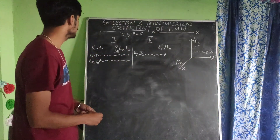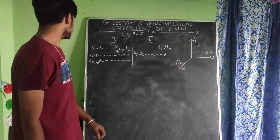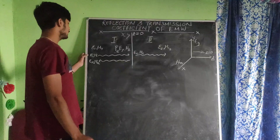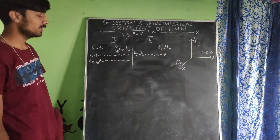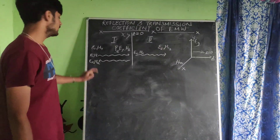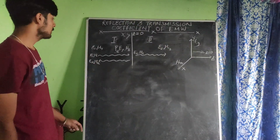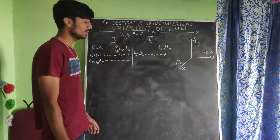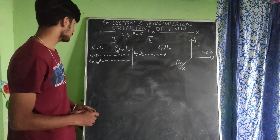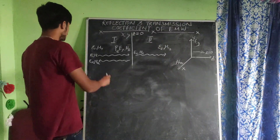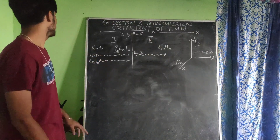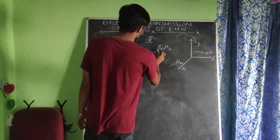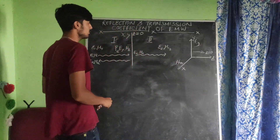When an incident wave is traveling from medium one to another, let the incident wave be E_i with its magnetic component H_i. Some gets reflected — that is E_r with magnetic component H_r — and some gets transmitted as E_t with magnetic component H_t. Here epsilon_1 is the permittivity and eta_1 is the intrinsic impedance for medium one, while epsilon_2 and eta_2 are for medium two.